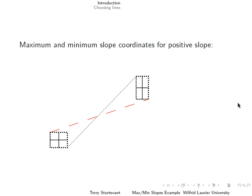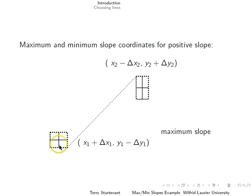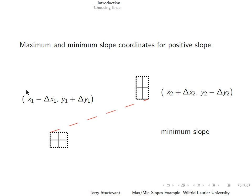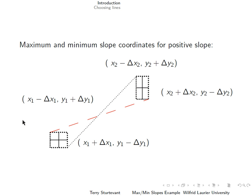For a graph with positive slope, the line of maximum slope comes from the lower right of the left point, because the x coordinate is increased by its uncertainty and the y coordinate is decreased by its uncertainty. At the right point, the y coordinate is increased by its uncertainty and the x coordinate is decreased by its uncertainty. For a line of minimum slope, we go from the opposite corners: the x coordinate is decreased and the y coordinate is increased on the left point, while the x coordinate is increased and the y coordinate is decreased on the right point.